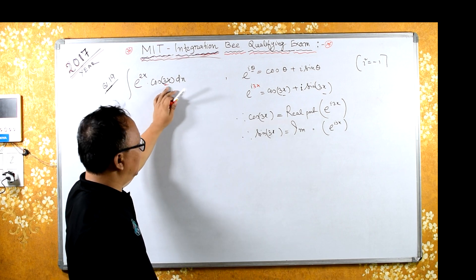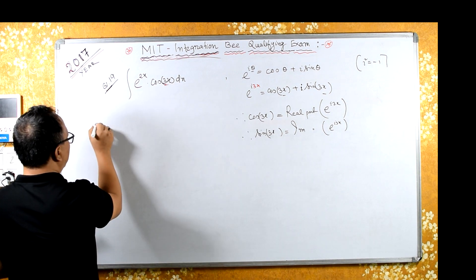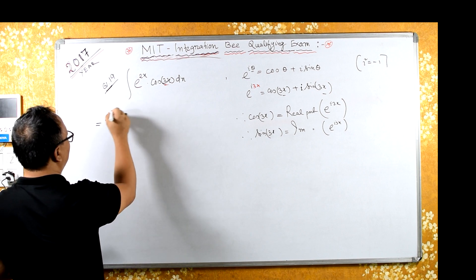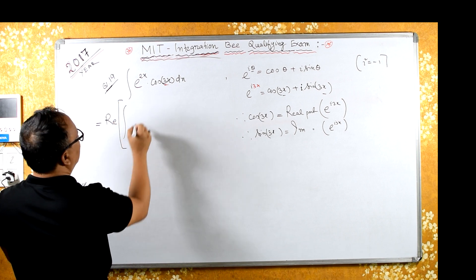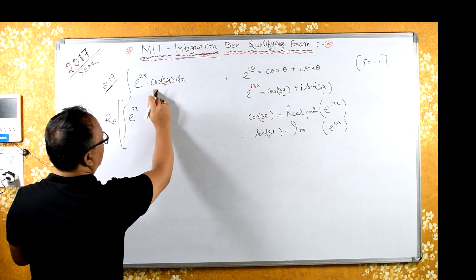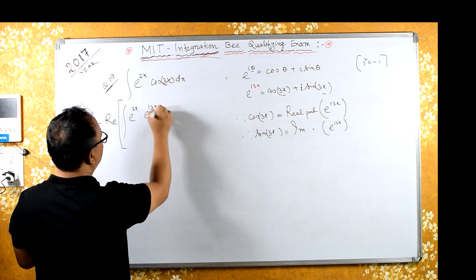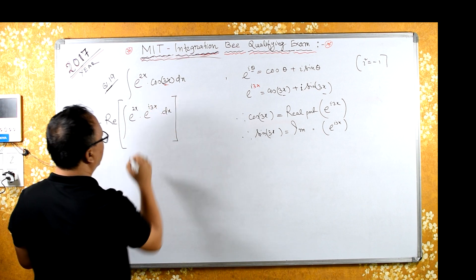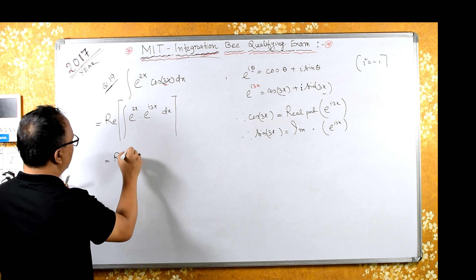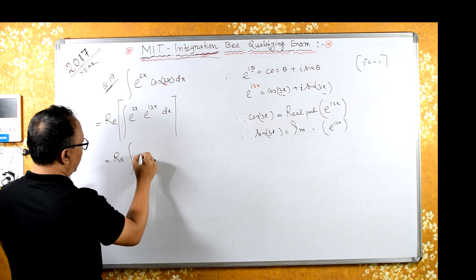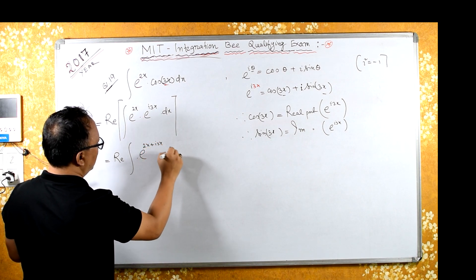Since we have cos(3x) in our integral, cos(3x) can be written as the real part of e raised to i·3x. Therefore the integral becomes the real part of the integral of e^(2x) · e^(i·3x) dx. Since the bases are the same, we add the indices.